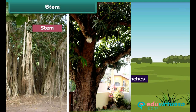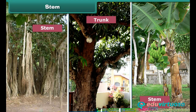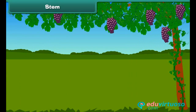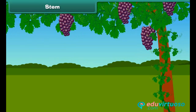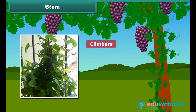Some trees such as banana have a thick but soft and green stem. In some plants, the stems are so weak that they cannot hold the plant upright. Such plants climb with the help of a support and are called climbers — money plant is the best example.